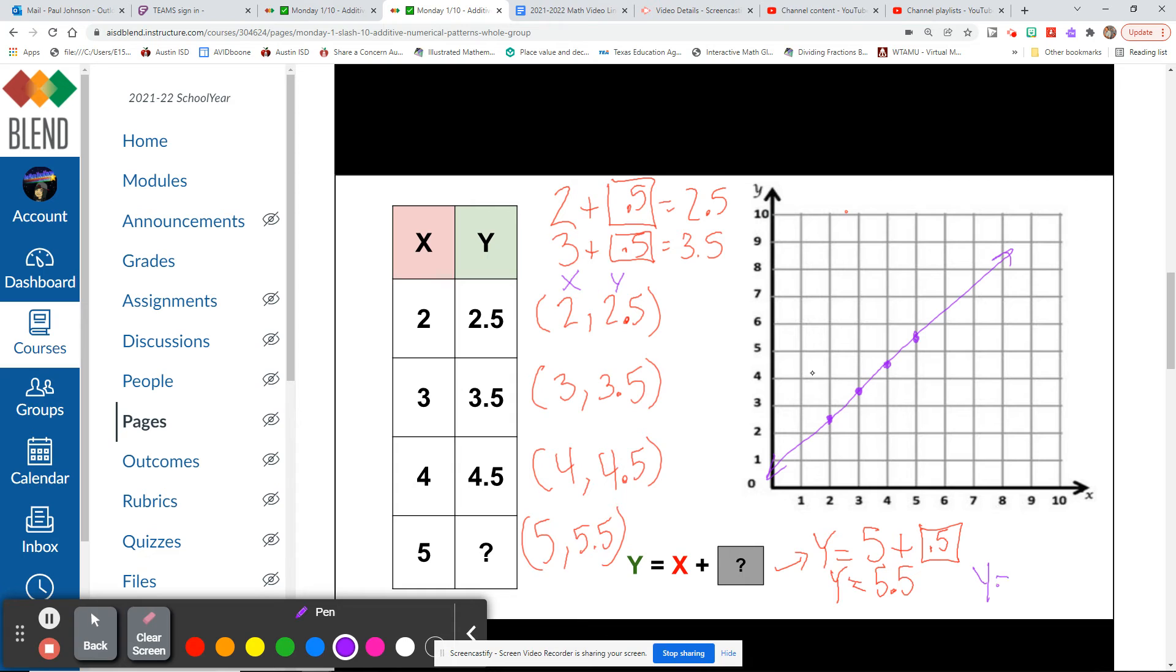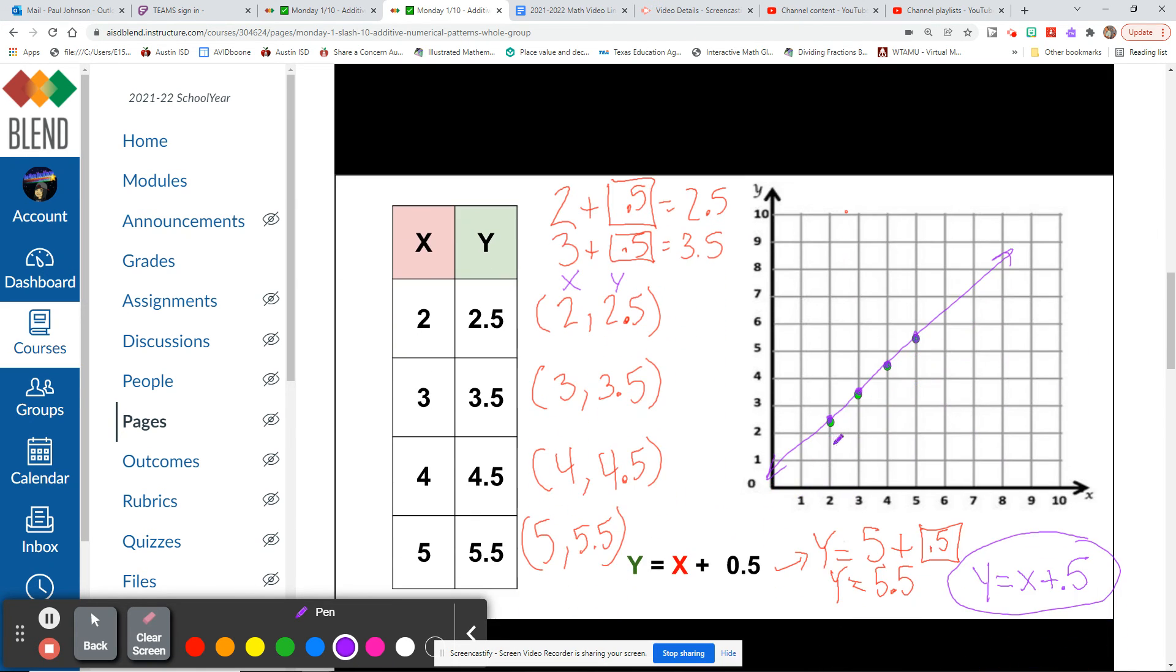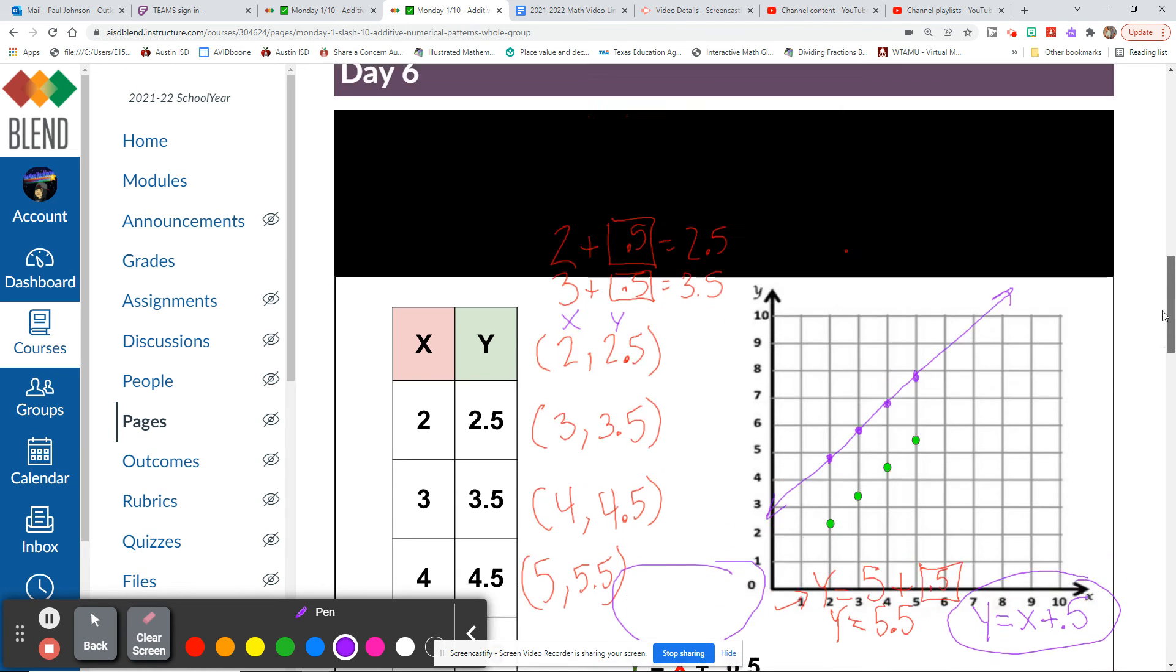Our pattern is y equals x plus 5 tenths. Every time we added 5 tenths to our x value, we got our y value. So this is a complete data table with an additive pattern, and we plotted all of that information in the first quadrant of the coordinate plane. That's exactly what we needed to do today: generate a numerical pattern when given a rule. We made a pattern with these dots when we were given the rule y equals x plus 5 tenths. We've successfully done our goal for the day.